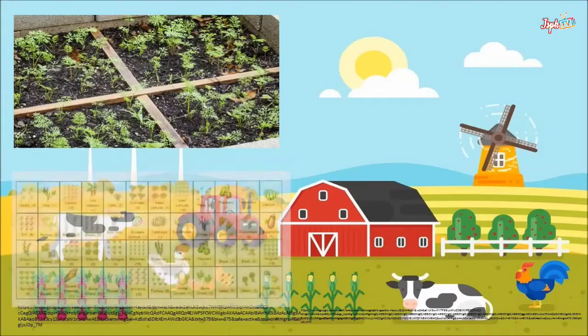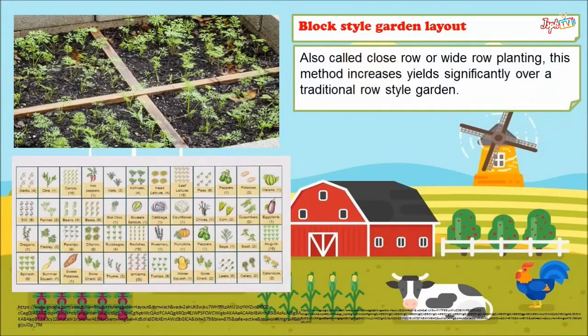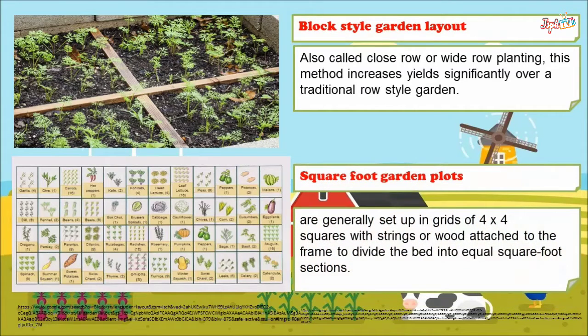We also have a block style garden layout, also called close row or wide row planting. This method increases yield significantly over a traditional row style garden. Square foot garden plots are generally set up in grids of four by four squares, with strings or wood attached to the frame to divide the bed into equal square foot sections.